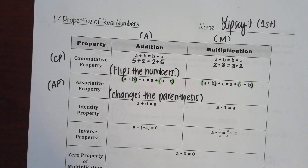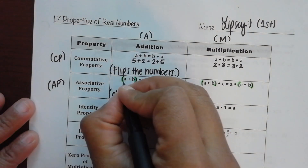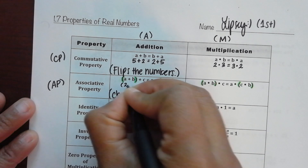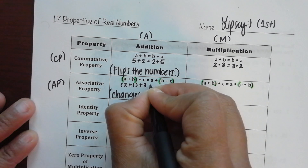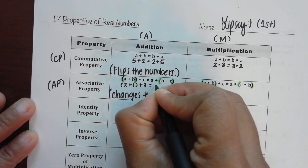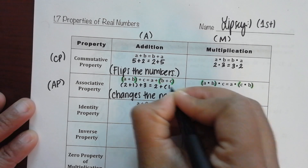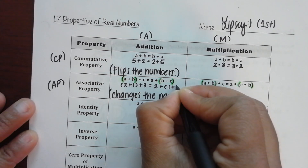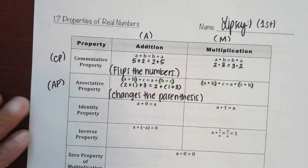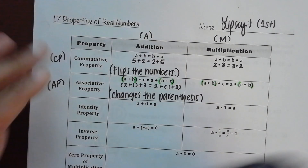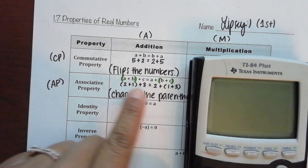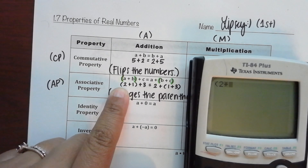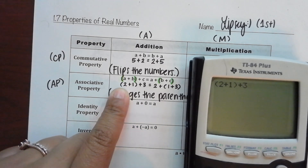It should not change anything else, and we're going to prove that. If I plug in two plus one plus three on both sides, grab your calculator. We're going to type in only the left-hand side: parentheses two plus one, close parentheses, plus three — that's all we're typing in.